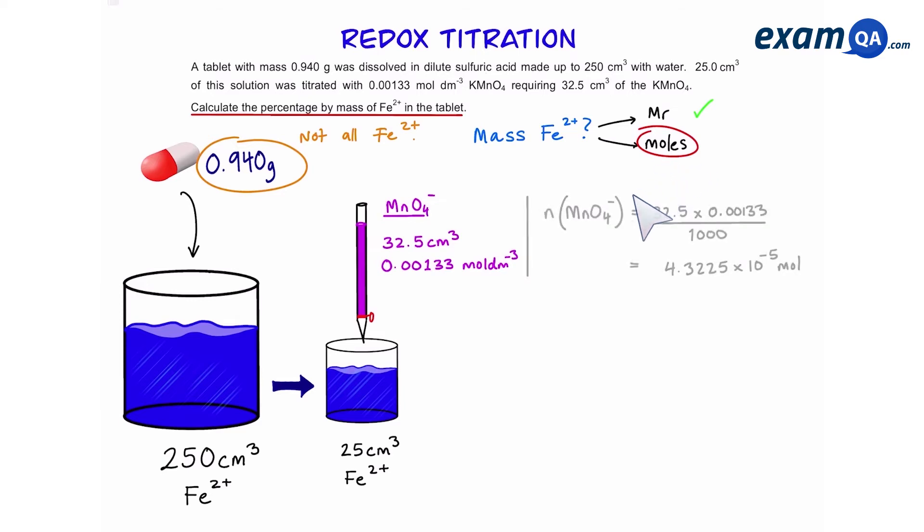So using our formula, number of moles is equal to concentration times volume over 1000. We get this number for moles of manganate.